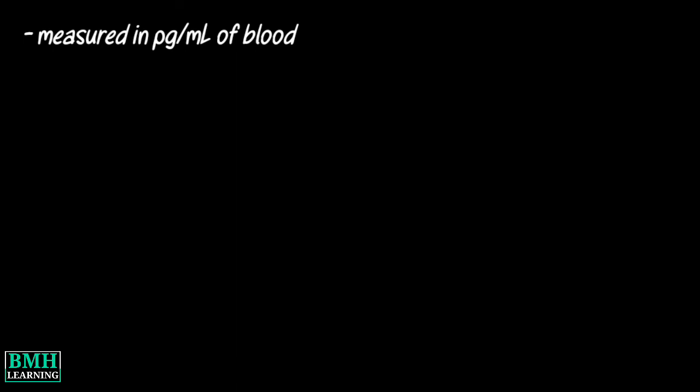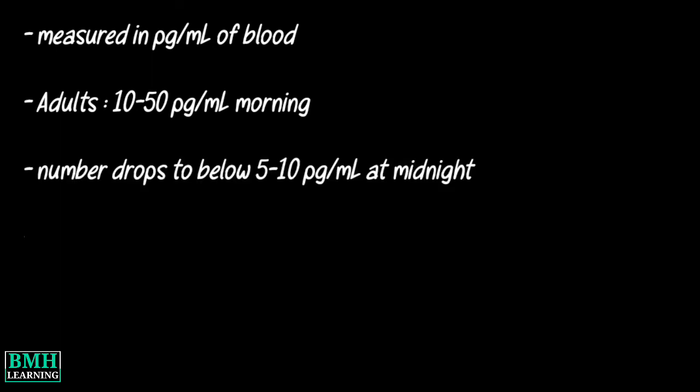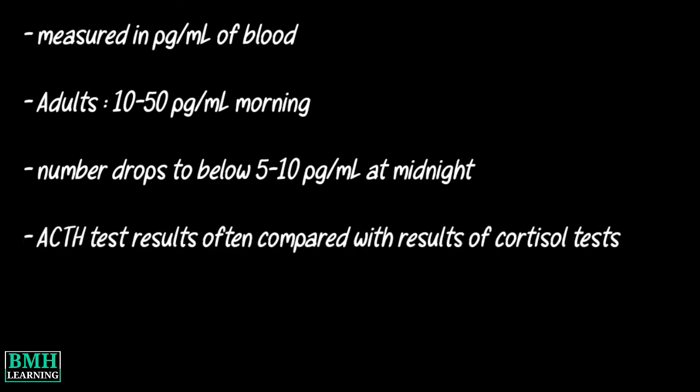What do the results mean? ACTH is measured in picograms per milliliter of blood. Adults normally have ACTH levels of 10 to 50 picograms per ml at 8 am. The number drops to below 5 to 10 picograms per ml at midnight. Results of an ACTH test are often compared with results of cortisol tests and may show one of the following.